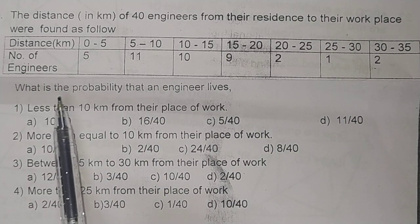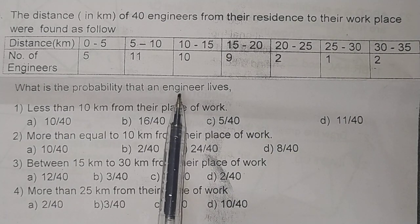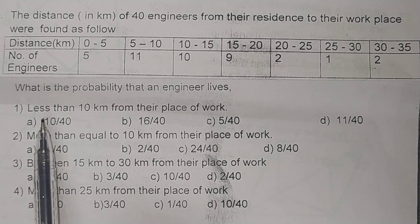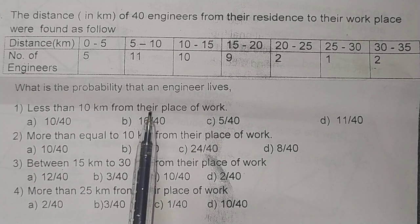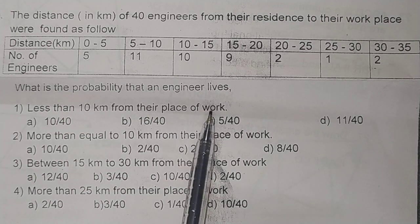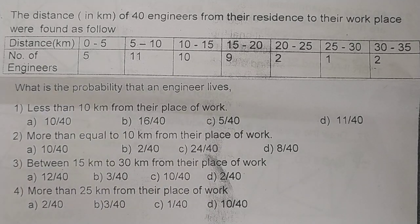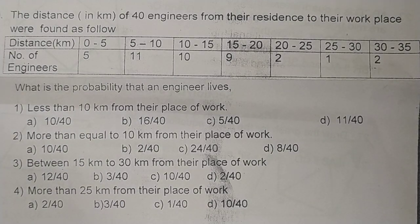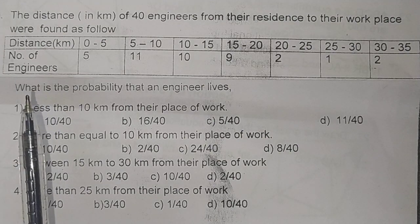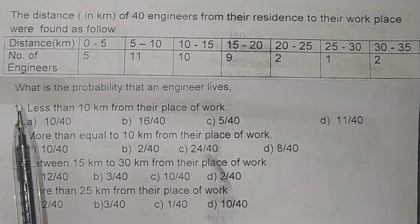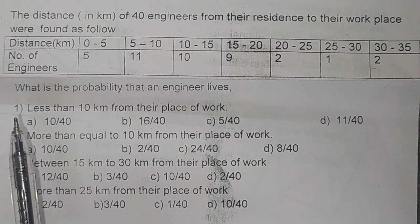The first question is: what is the probability that an engineer lives less than 10 kilometers from their place of work? So 10 kilometer se kum ki distance wale engineers ki probability nikaalni hai. Probability nikaalne ka formula hai: number of favorable outcomes over total outcomes.